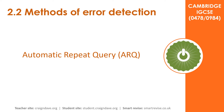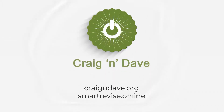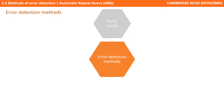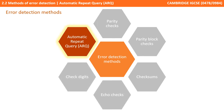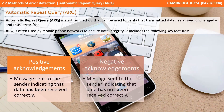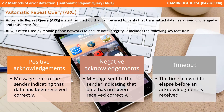In this video we take a look at another of the methods of error detection: automatic repeat queries. Automatic repeat query, or ARQ, is yet another method which can be used to verify that transmitted data has arrived unchanged and thus error free.